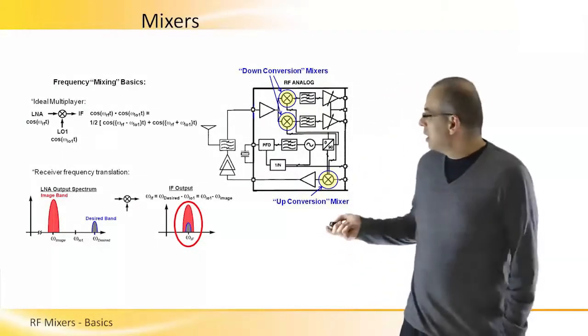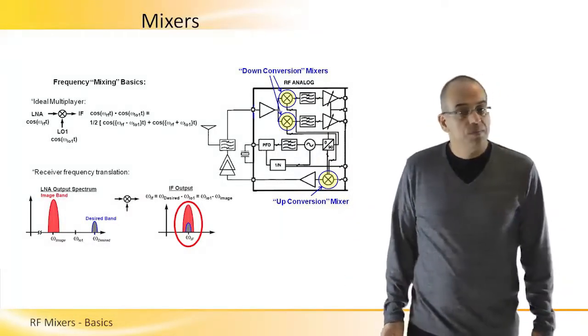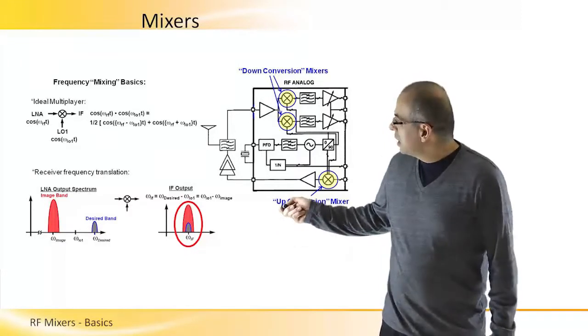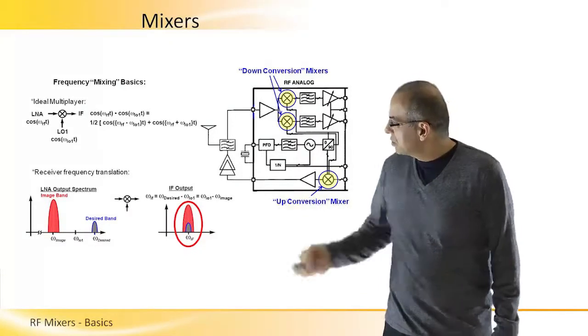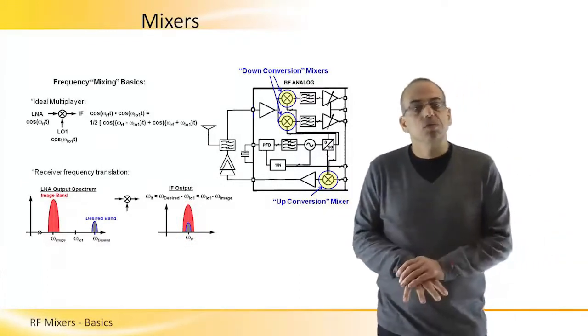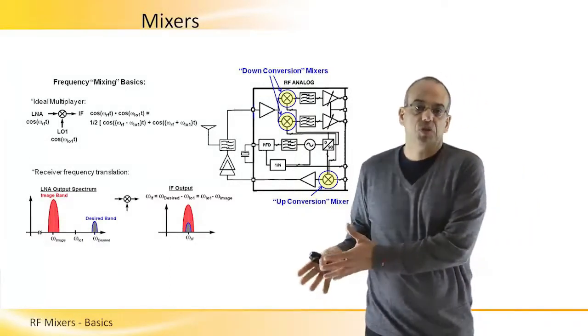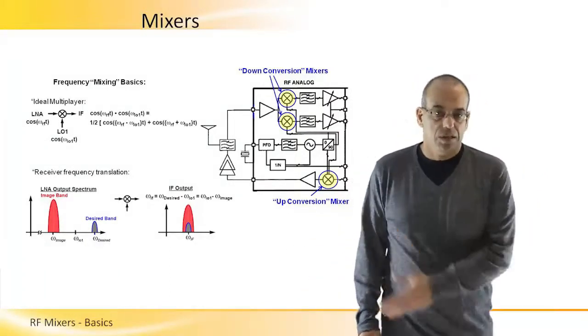So we usually will need to filter it out to make sure that we don't get two multiples of two different frequencies at the same intermediate or IF frequency as an output.